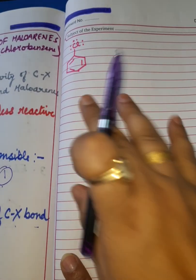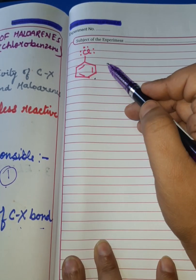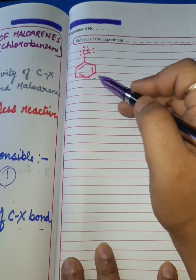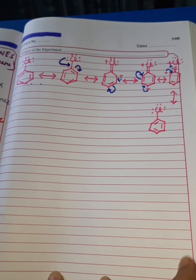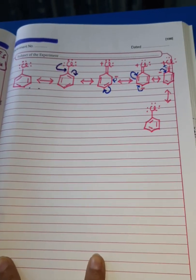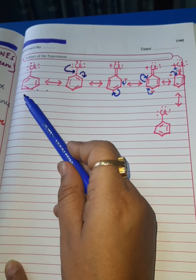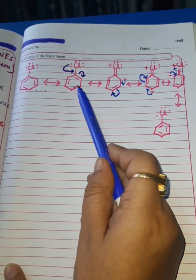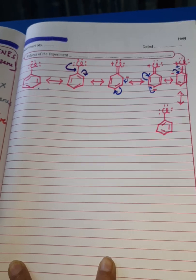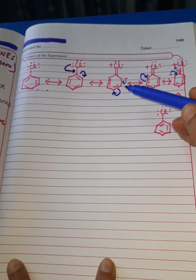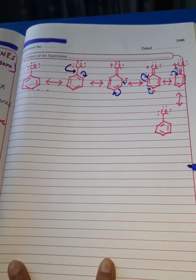Let us discuss the first factor: resonance stabilization. We know that chlorobenzene — I am taking chlorobenzene as an example of a haloarene, as it makes it easier to explain. Chlorobenzene is an aromatic compound which undergoes resonance, and its resonating structures can be written out. These are the resonating structures of chlorobenzene. Observe the resonating structures carefully — delocalization of electrons takes place. Chlorobenzene can be represented as the resonance hybrid of the following canonical forms or resonating structures.